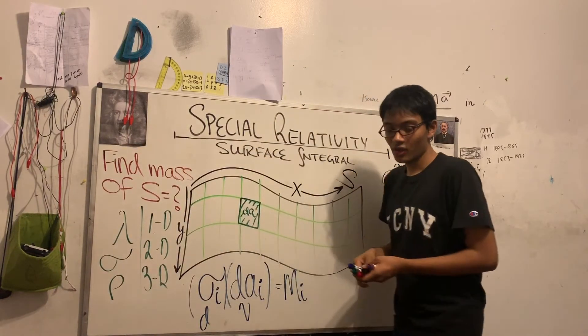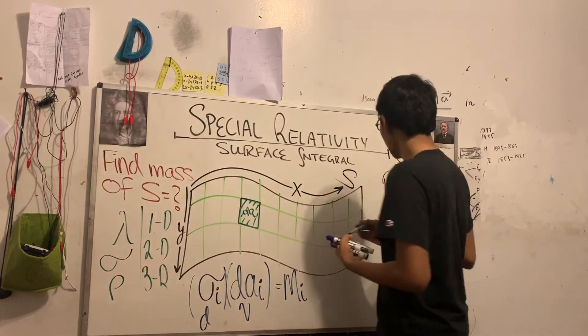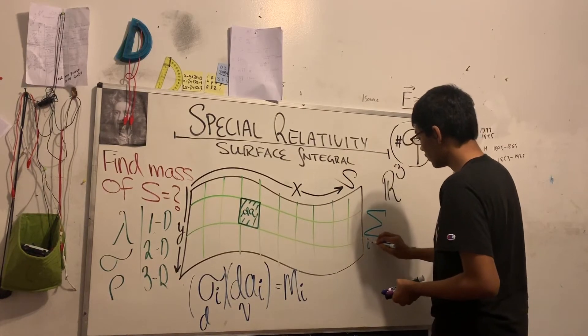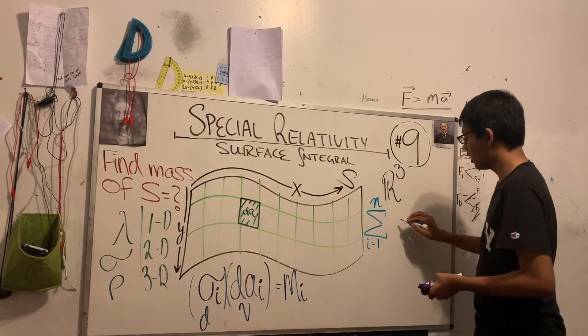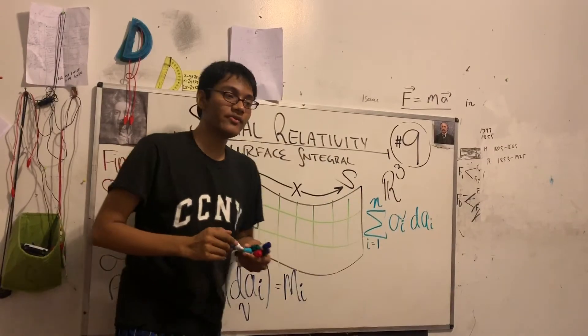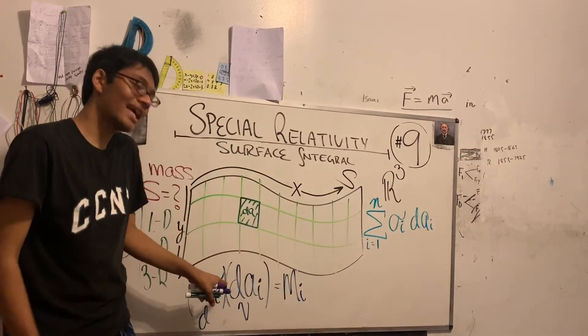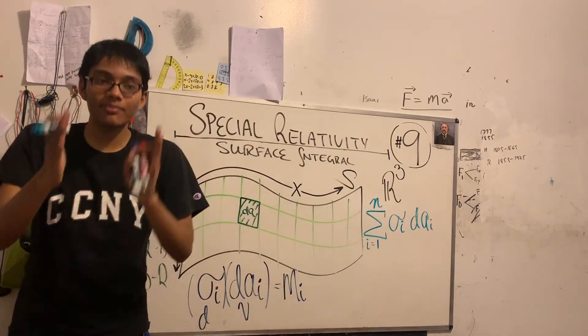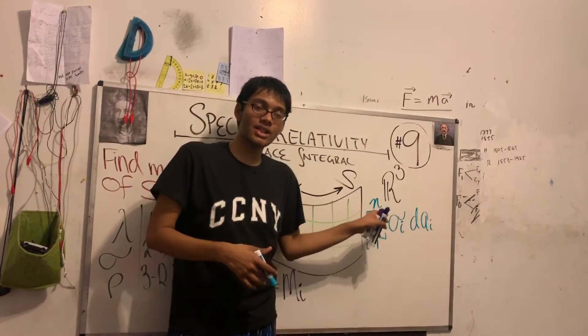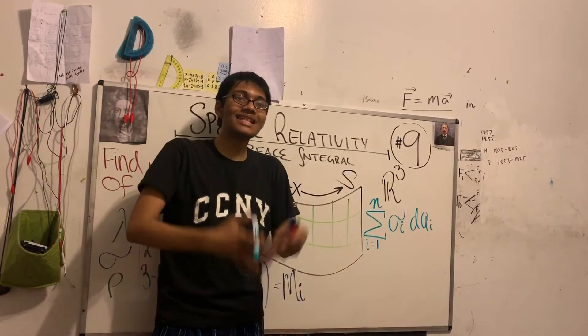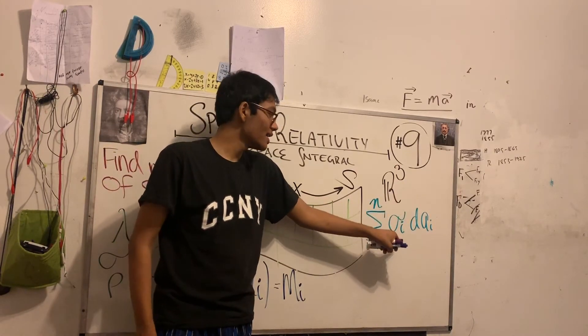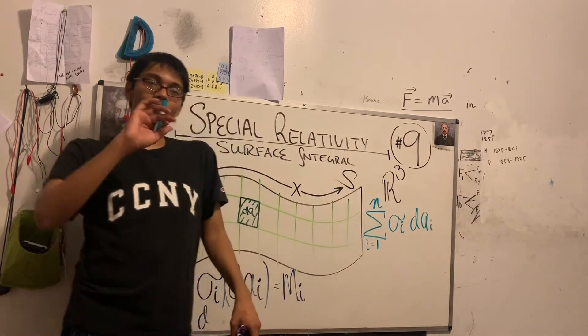Now we're going to take the summation. We're going to sum up all the masses over this entire region. So we take the summation from i equals 1 to n pieces of sigma sub i dA sub i. What did I just do? I took my density, multiplied it by my area, and got the mass of a very small piece. Then I used summation notation to sum up the masses over my entire region.